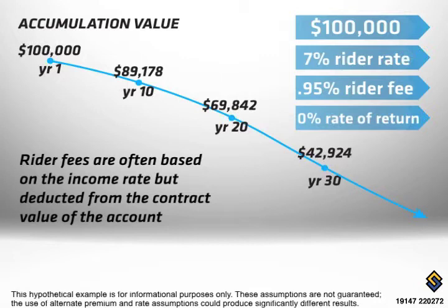As illustrated, as the income account increases each year, the fee increases proportionately to the income rider rate each year.